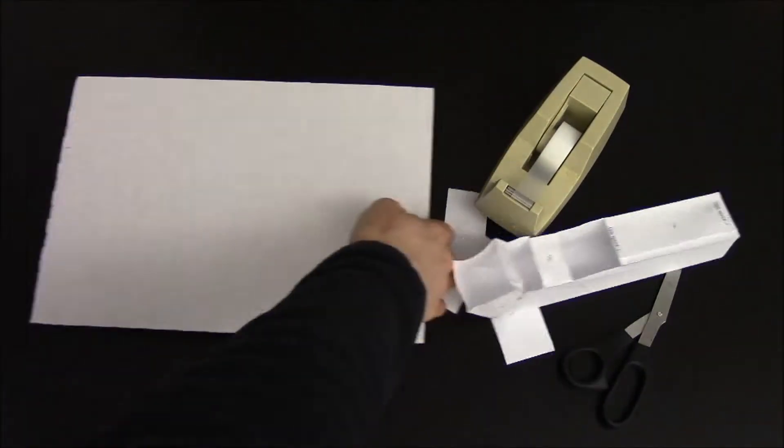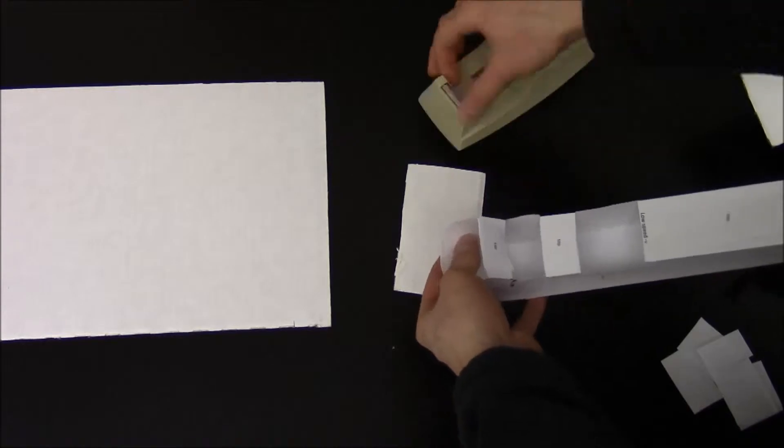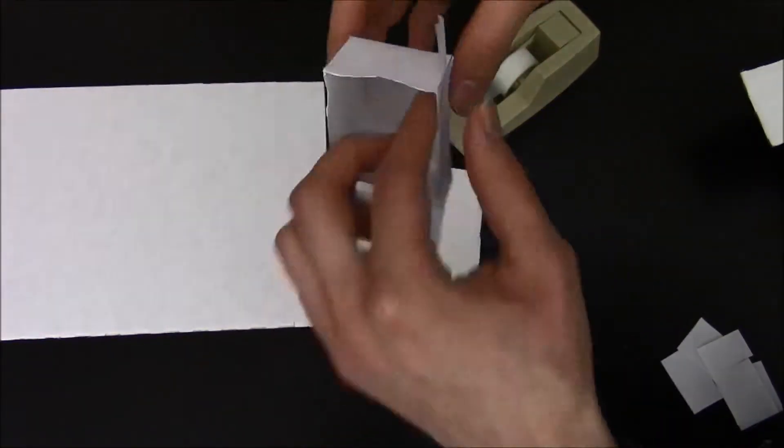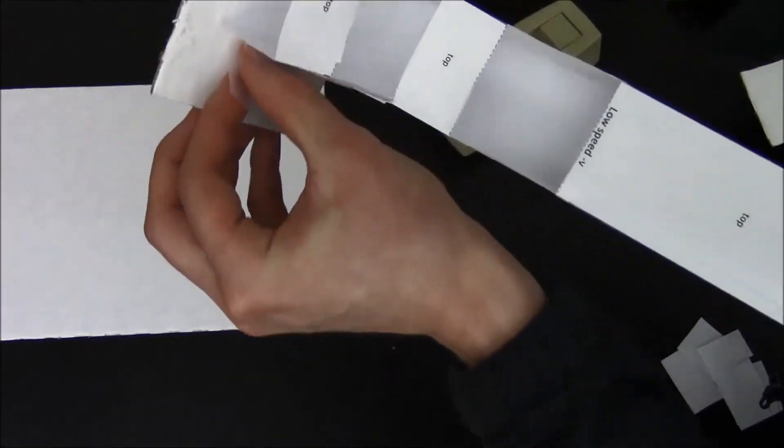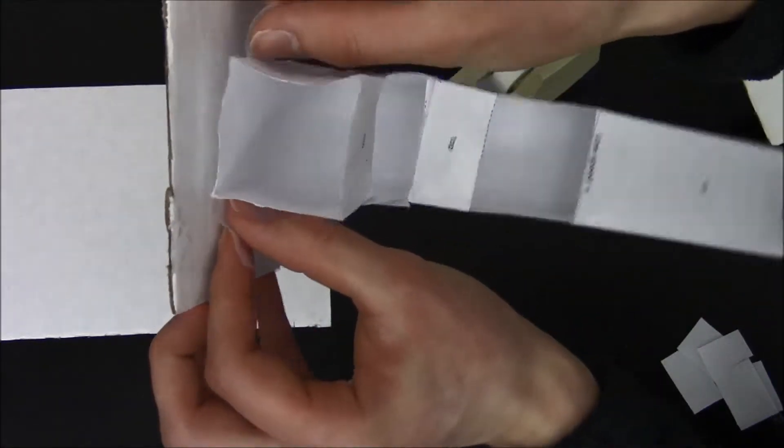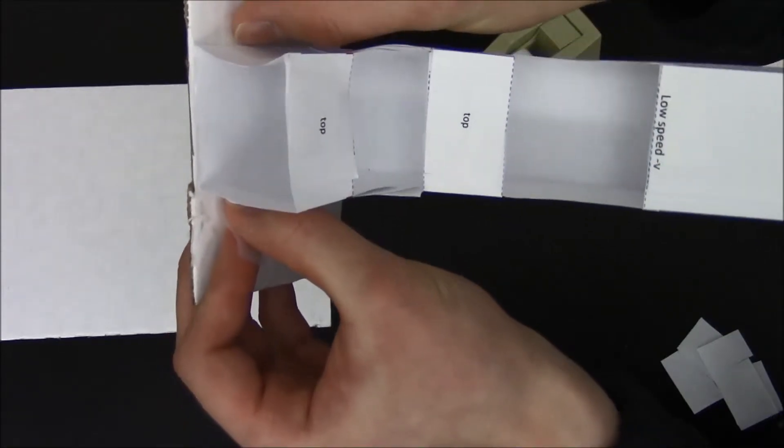The students will have cardboard platforms to build on. We want to make the platform for our velocity initializer out of the same thickness material as the student's cardboard platform. This will allow for a flush connection between the velocity initializer platform and the student's platform.